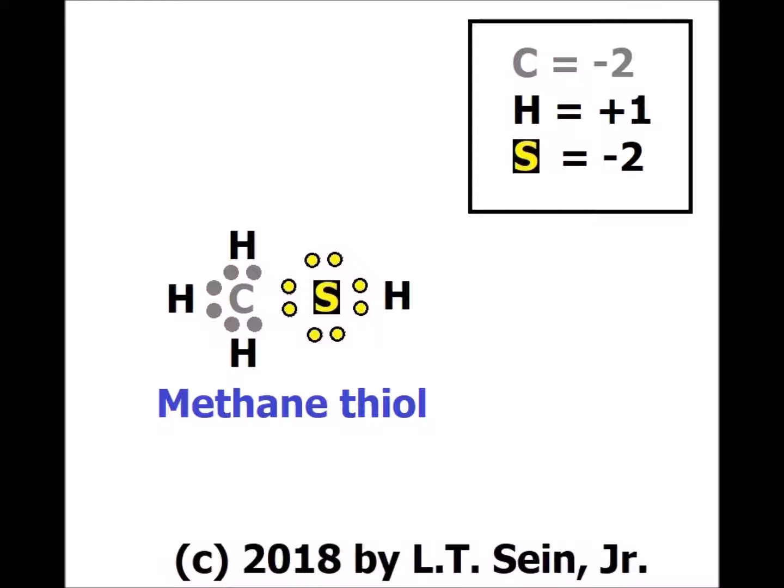Similarly, sulfur started off with 6 electrons and now has 8, so it has an oxidation number of −2. Hydrogen started with 1 and now has 0, giving it an oxidation number of +1 in methanethiol.